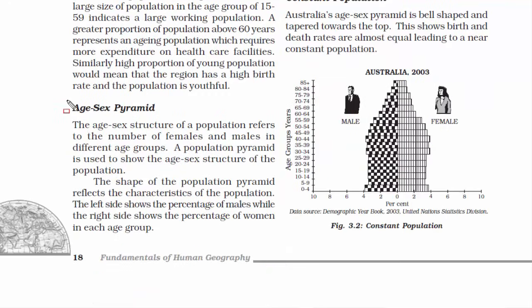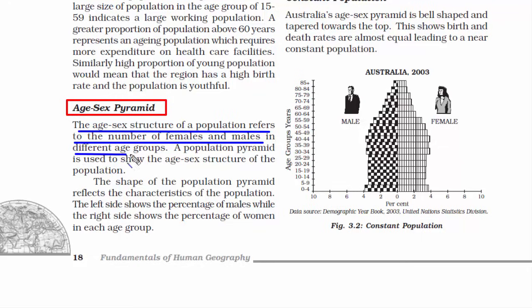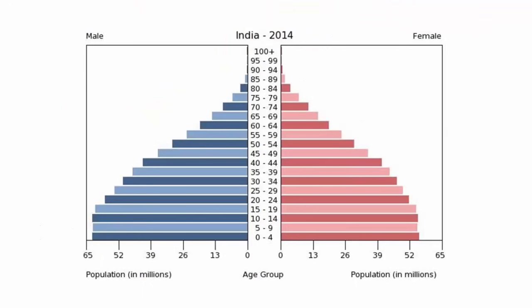Now, what do we mean by an age-sex pyramid? It simply refers to the number of females and males in different age groups. A good amount of information about the population broken down by age and sex can be read from a population pyramid. It also tells us how a population changes over time — including the birth rate, death rate, and life expectancy of a country. Here is a picture of India's population pyramid.